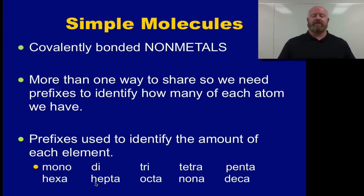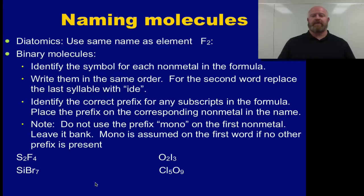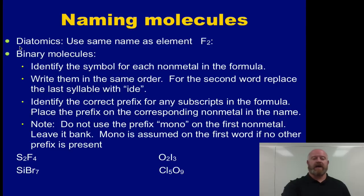Now working with these different prefixes we have to be able to both name the compound and write the formula. So let's start off by talking about naming those molecules. We have our diatomics which are two of the same element put together, so for example like F2. When we name these we don't use any prefix with those. We just name it the same as we would the elements name. So we would just call F2 fluorine like Cl2 would be chlorine and H2 would be hydrogen. We don't give any different name to our diatomics.